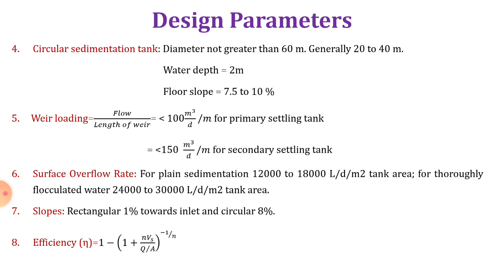Surface overflow rate for plain sedimentation should be between 12,000 to 18,000 liters per day per meter square of tank area. For thoroughly flocculated water it should be between 24,000 to 30,000 liters per day per meter square of tank area. Slope for rectangular tanks is 1 percent toward the inlet and for circular it is 8 percent. The efficiency nu is given by: 1 − (1 + N·Vs / (Q/A))^(−1/N).